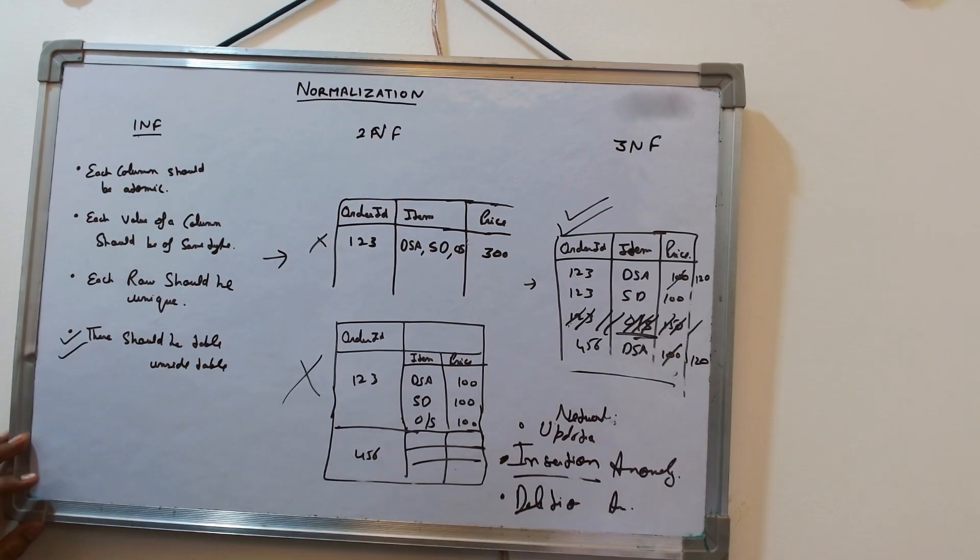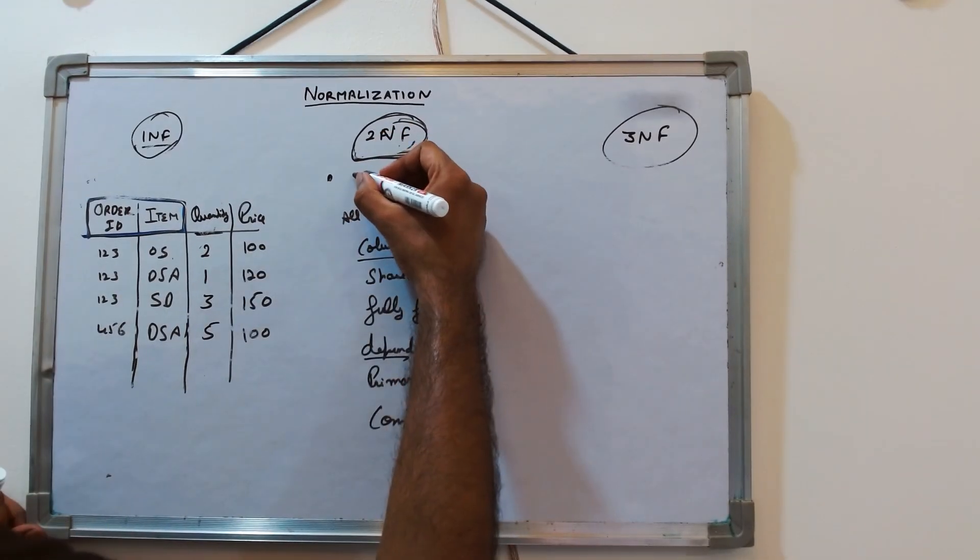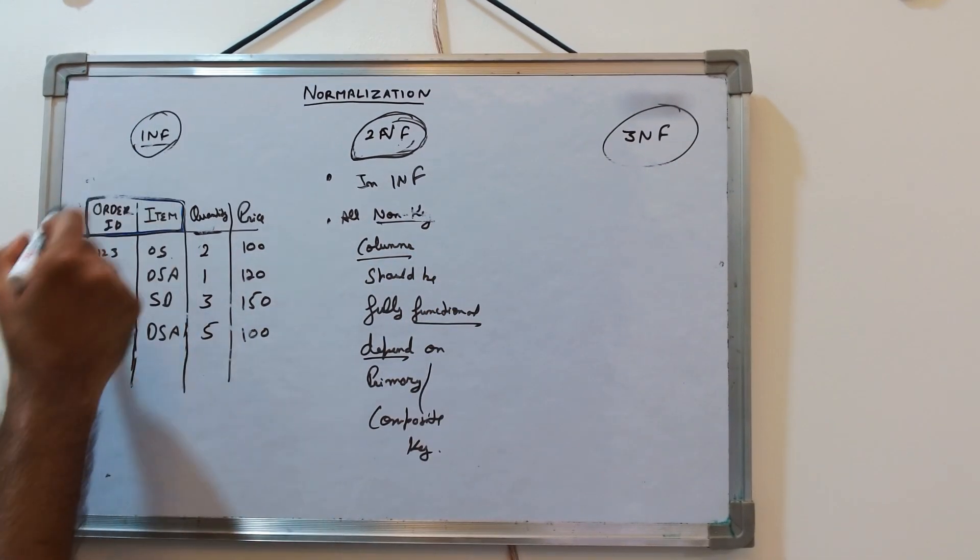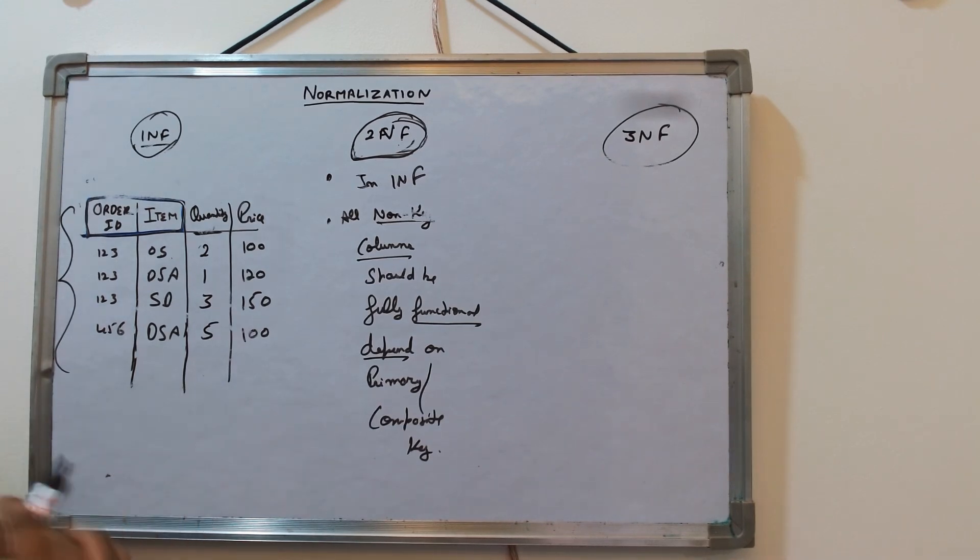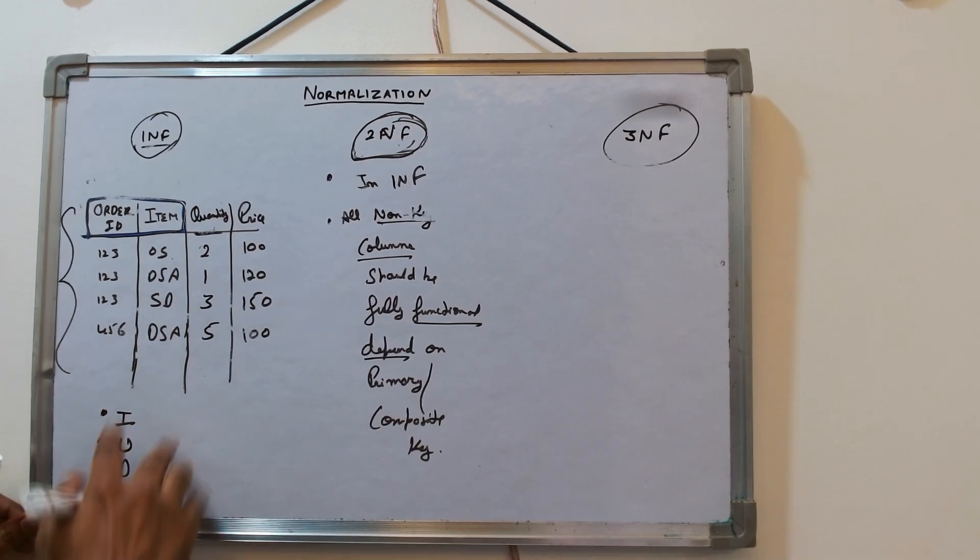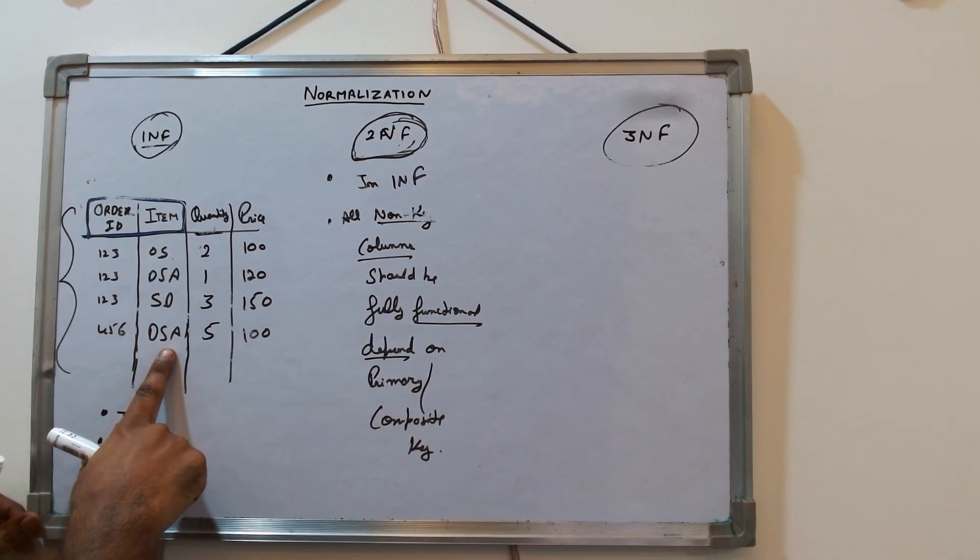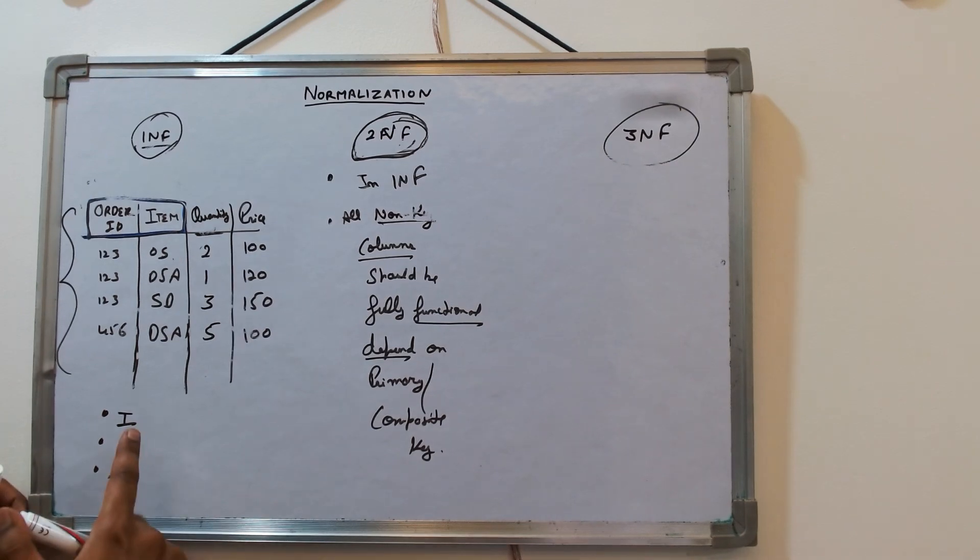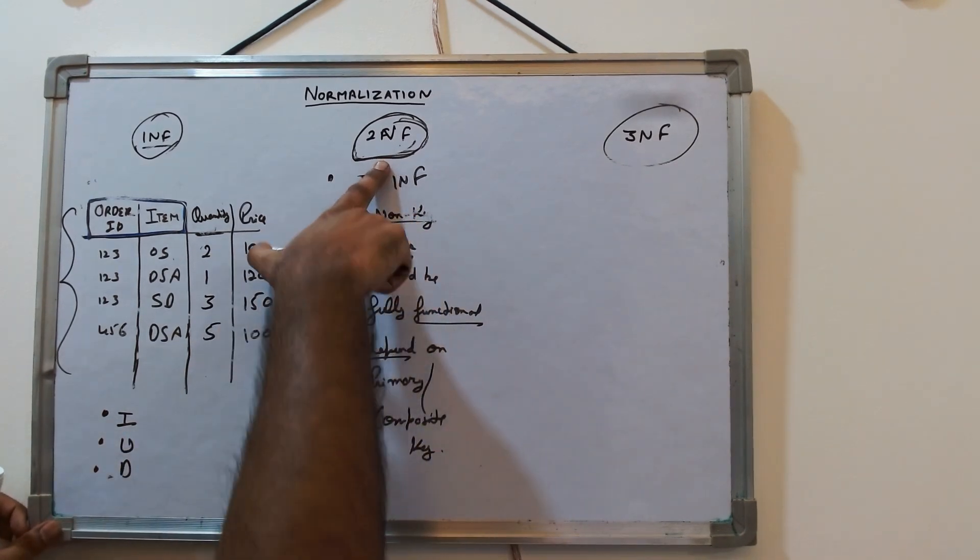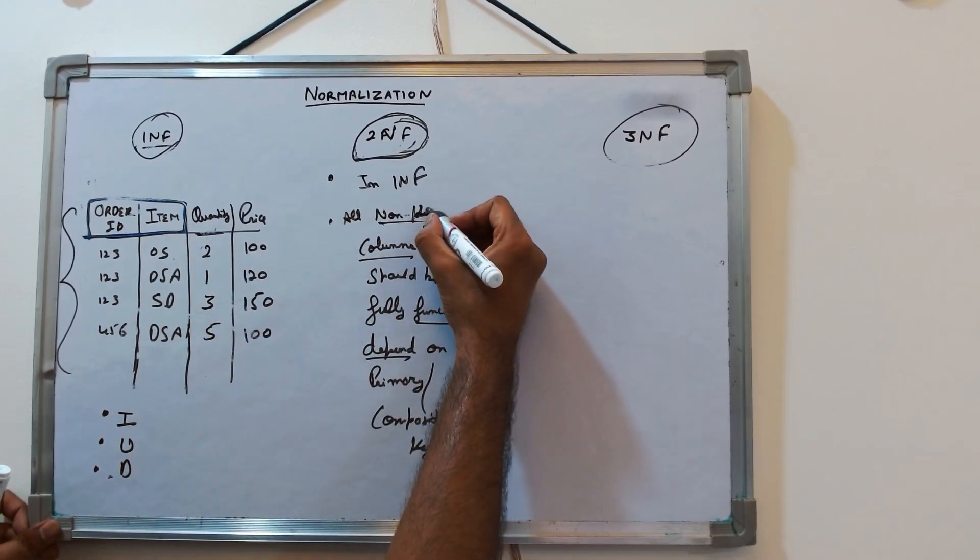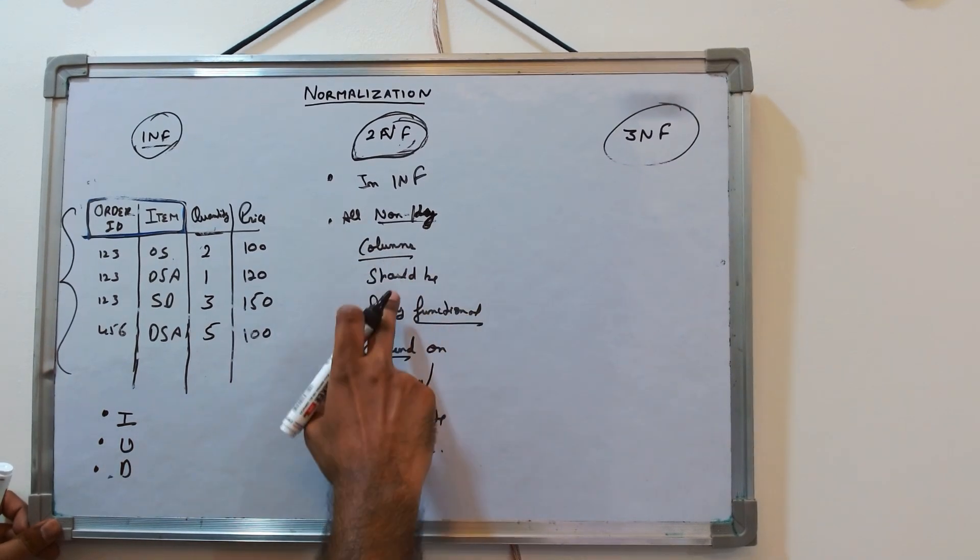Now let's understand 2NF. Table should be in 1NF. Here if you see from the previous 1NF, let's say this is the table which is already in 1NF, and it has all the three issues which is insertion, updation, and deletion anomaly. If I want to add a new item, let's say networking, it's not possible until I have an order. Similarly, updation and deletion also has an issue.